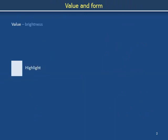Value is a fancy word for brightness — the number of photons collected by a viewer from a given solid angle of view. Levels of brightness include highlights, midtones, and shadows.